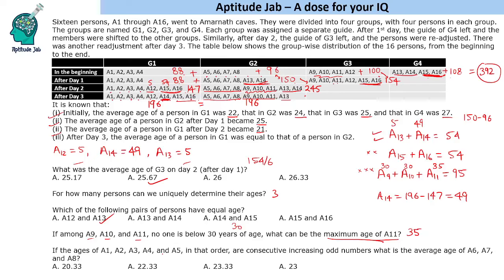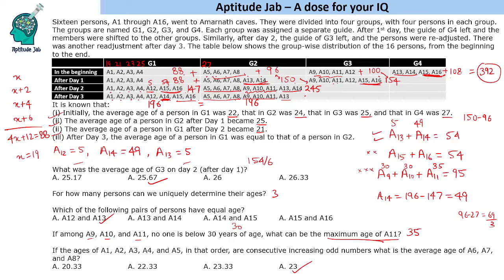If A1 through A5 are consecutive increasing odd numbers, and A1 through A4 sum to 88, let A1 = X. Then the four values are X, X+2, X+4, X+6, giving 4X + 12 = 88, so X = 19. The five ages are 19, 21, 23, 25, 27. Since A5 = 27 and G2's total is 96, the sum of A6, A7, A8 is 96 − 27 = 69, and their average is 23 years. That completes the solution to this set.